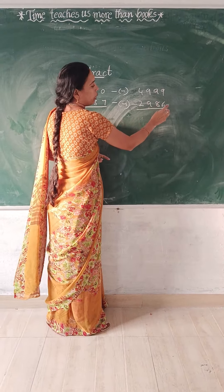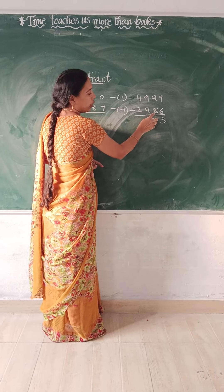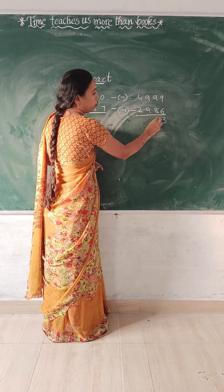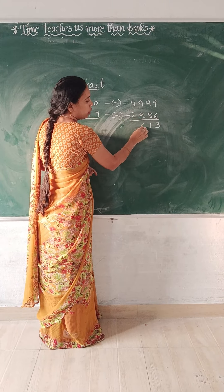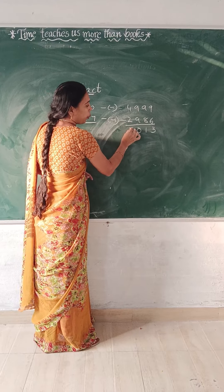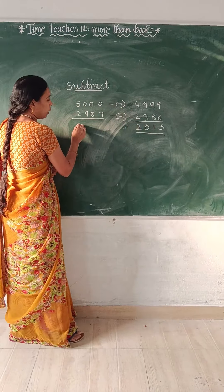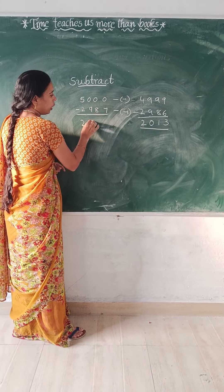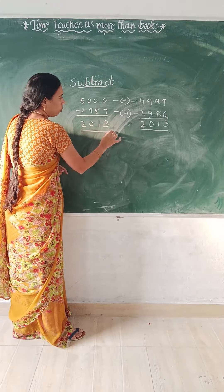9 minus 6 is 3, 9 minus 8 is 1, 9 minus 9 is 0, 4 minus 2 is 2. So what is the answer? 2,018.